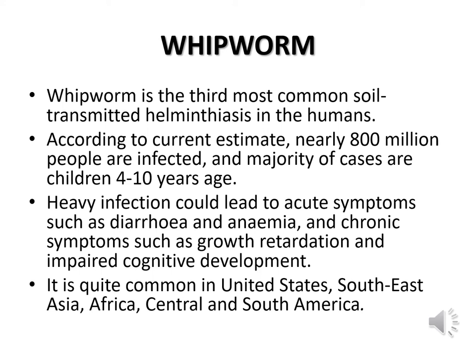Now we will discuss whipworm infection. Whipworm is the third most common soil-transmitted helminthiasis in humans. According to current estimates, nearly 800 million people are infected, and the majority of cases are children in the age range of 4 to 10 years. Heavy infections could lead to acute symptoms such as diarrhea and anemia, and chronic symptoms such as growth retardation and impaired cognitive development. Whipworm infection is quite common in the United States, South East Asia, Africa, and Central and South America.